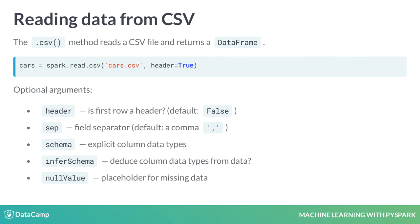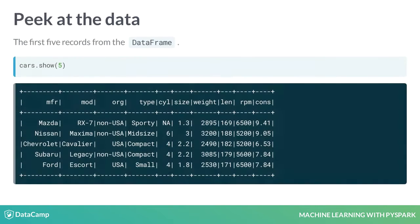Let's take a look at the data we've just loaded. Using the show method, we can take a look at a slice of the DataFrame. The CSV method has split the data into rows and columns and picked up the column names from the header record. Looks great, doesn't it?